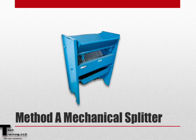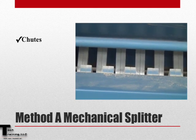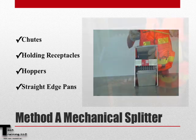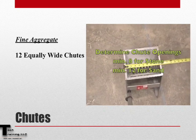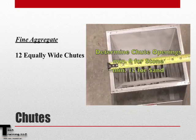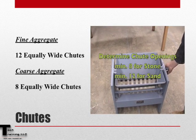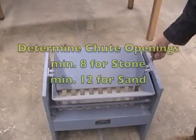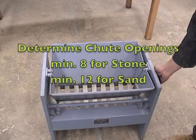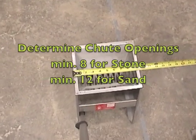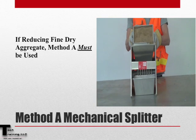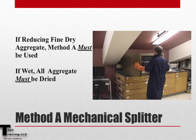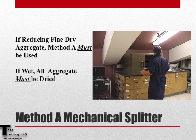A mechanical splitter should consist of chutes, holding receptacles, hoppers, and straight edge pans. Fine aggregate mechanical splitters shall have a minimum of 12 equally wide chutes, while coarse aggregate mechanical splitters shall have a minimum of 8 equally wide chutes. Each chute should be approximately 50% larger than the maximum aggregate size in the sample to be split. If reducing fine dry aggregate, Method A must be used. If the sample is wet or damp, it must be dried before using this procedure.